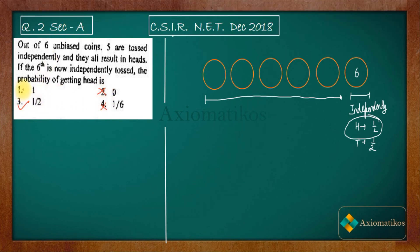You can easily see that the tossing of the sixth coin has nothing to do with the remaining five. So that is why the probability of tossing the sixth coin or the first coin or the second coin will be the same because you are doing it independently.